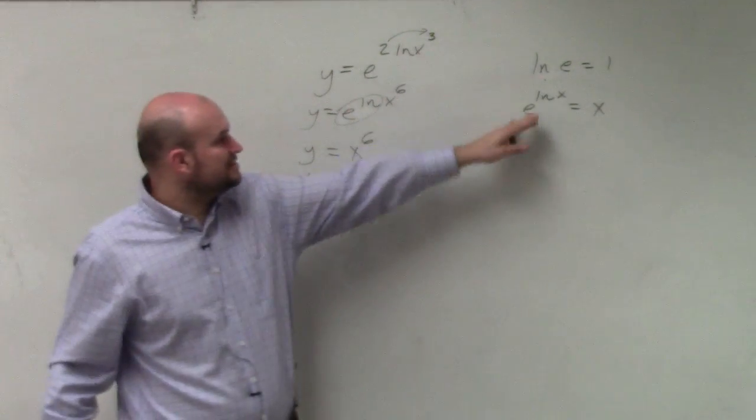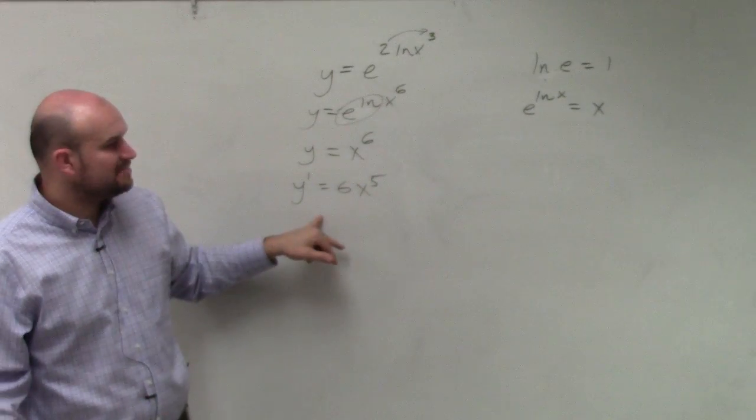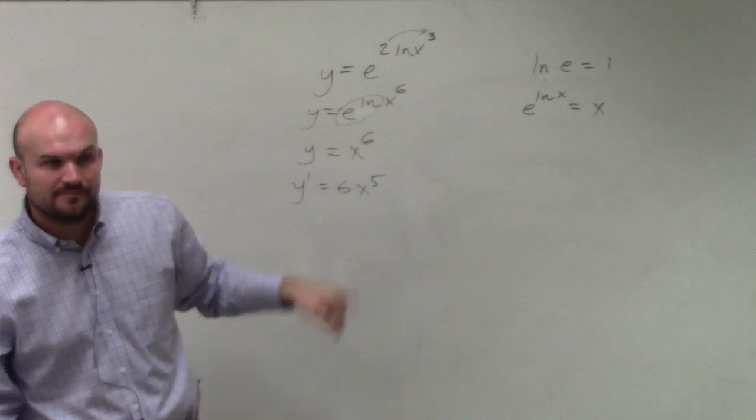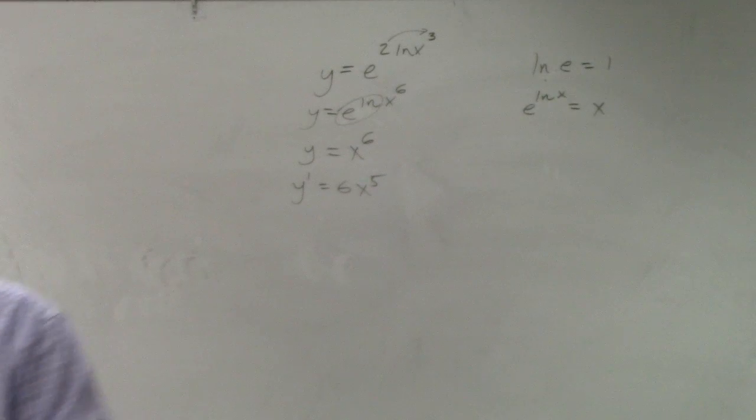Now I have that, which is just going to equal x to the 6. And then it's much easier to take the derivative. Another common mistake...